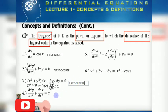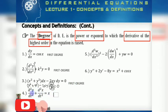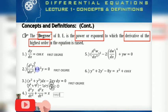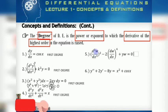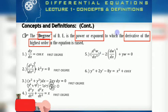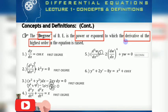For example four, both second-derivative terms have exponent one, so the degree is first degree. For example five, the third derivative of w with respect to x is raised to the second power, so it is a second-degree differential equation.